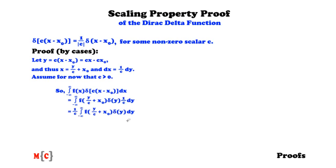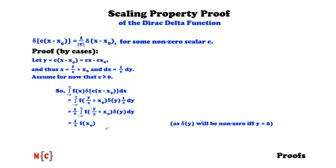We notice that delta(y) will only be non-zero if y equals zero — that is a characteristic of the Dirac delta function. If y equals zero, then y over c is also zero, so we only have f(x-null) from the integral. Therefore this equals 1 over c times f(x-null). So the original integral can be rewritten as 1 over c times f(x-null) when c is greater than zero. Keep this conclusion in mind, as we will return to it later.